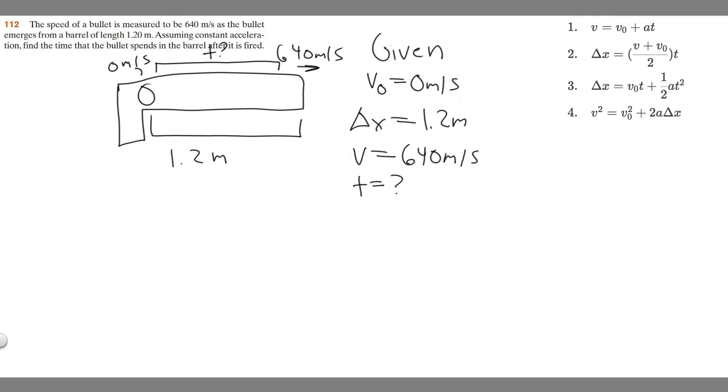So looking at these variables that we have, we should determine which kinematic equation to use. And I have them all right here. And so keep in mind, we're trying to solve for t, and we're not given acceleration. We're just assuming a constant acceleration. And so if you look at all three of these equations, they all contain a. So we obviously can't use those.